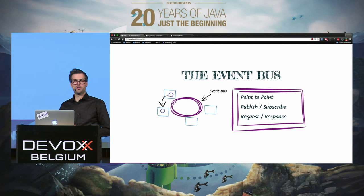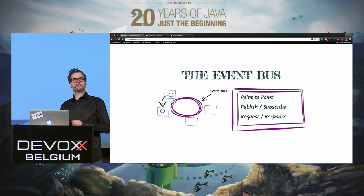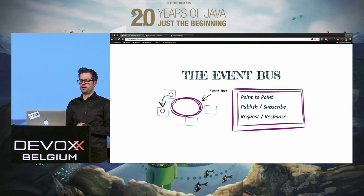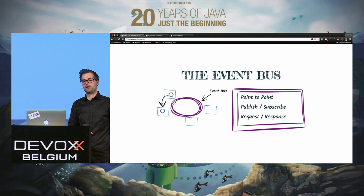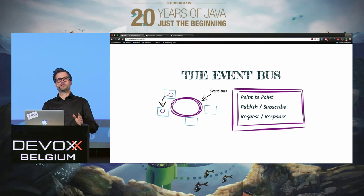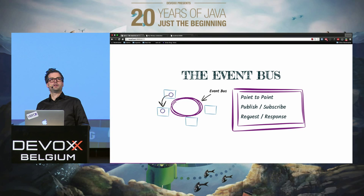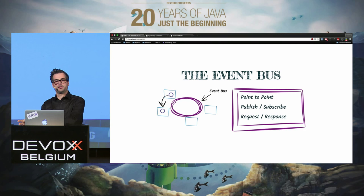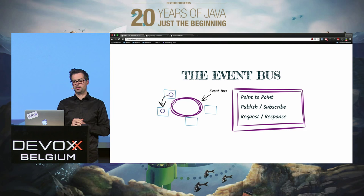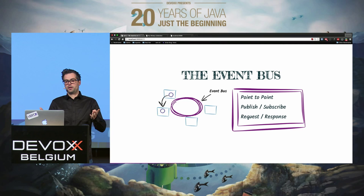In Vert.x we have a mechanism that allows us to distribute messages — the event bus. Think of it like a postman. Every time you want to send a message, you create an object, put it on the event bus, and the event bus looks at an opaque string address — like a home address — finds which part of the code is listening on that address, and delivers the message there.